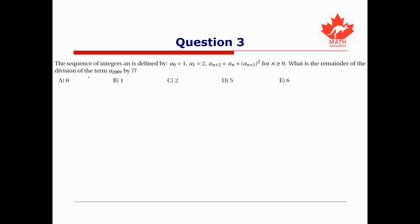Our final answer for question 2 is C: k = 4017. For this final question, we have a sequence defined by a₀ = 1, a₁ = 2, and for all n ≥ 0, a_{n+2} = a_n + a_{n+1}². We're asked: what is the remainder when a_{2009} is divided by 7? Since we want the remainder mod 7, we do our arithmetic mod 7. Because there are only finitely many remainders (0 through 6), there must be a repeating cycle.